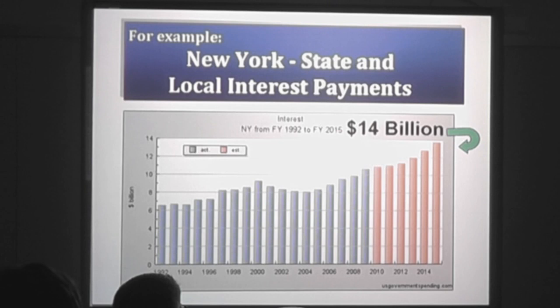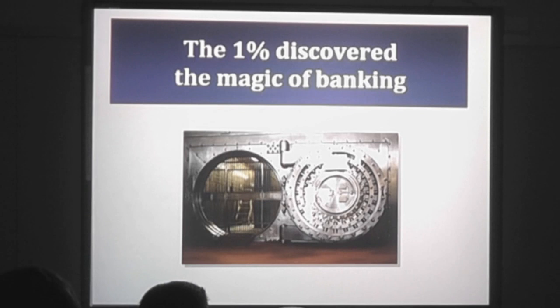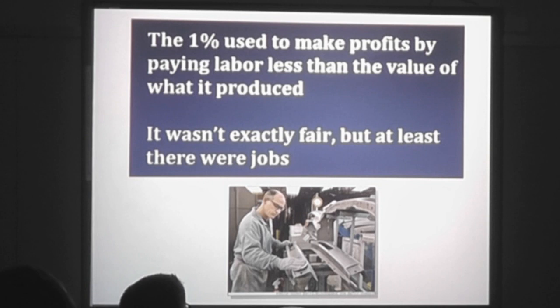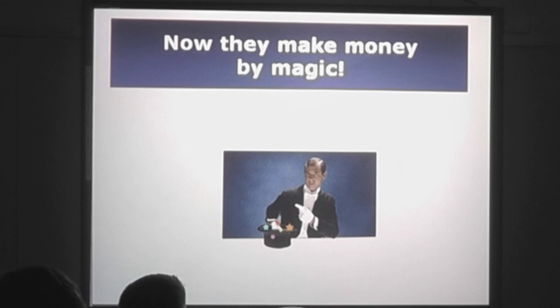In New York State, our state and municipal governments pay $14 billion a year to banks just in debt service on loans, which we can't get out of because you can't raise taxes. Then the 1% discovered the magic of banking. They used to make profits by paying labor less than the value of what it produced — that wasn't exactly fair, but at least there were jobs. Now they make money by magic.